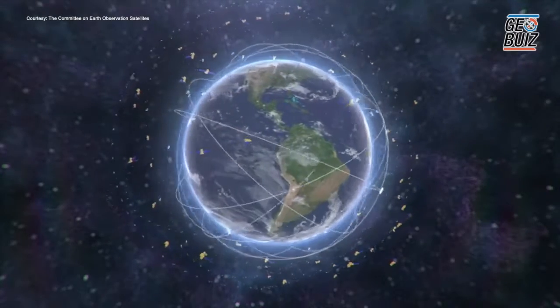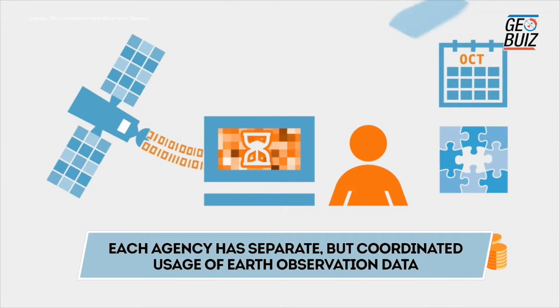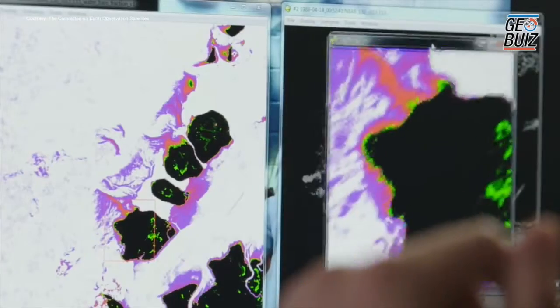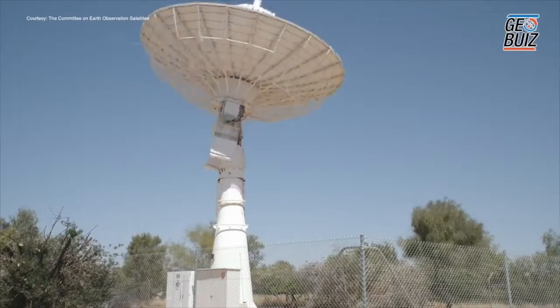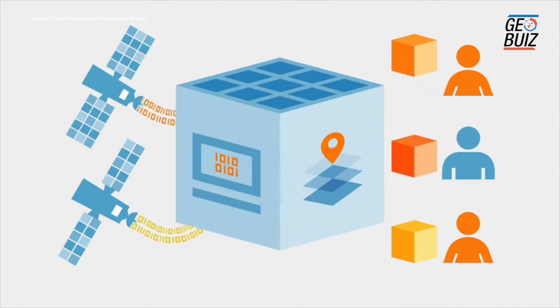We are one of the UN agencies that deals with food. There are two others — FAO and IFAD, the International Fund for Agricultural Development. We work closely together, but I would say that each agency has separate but coordinated usage of earth observation data. In spite of having related mandates, we do have different requirements and different operational aspects, and as a result we tend to make complementary but slightly different usages of the information.